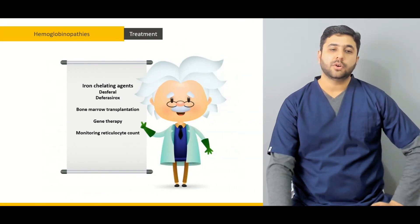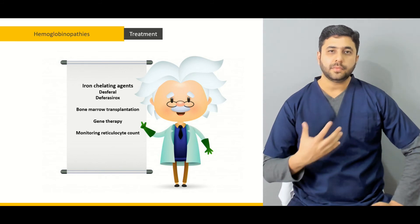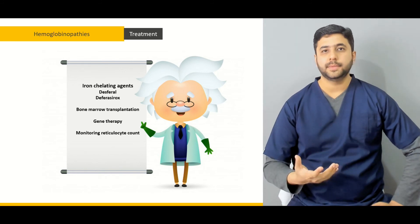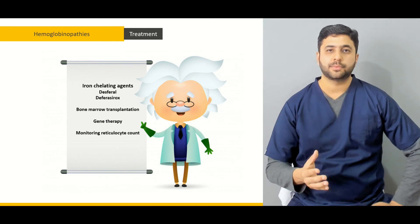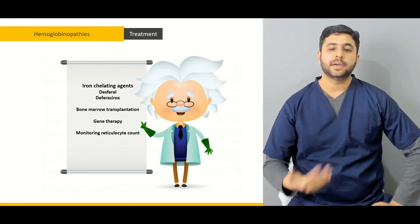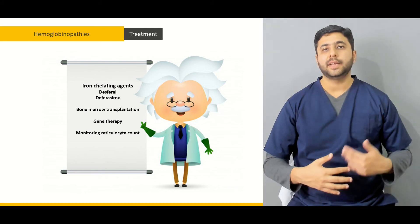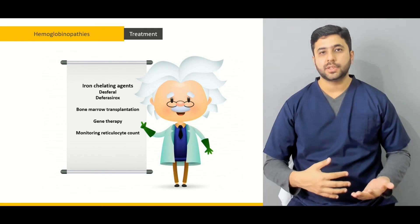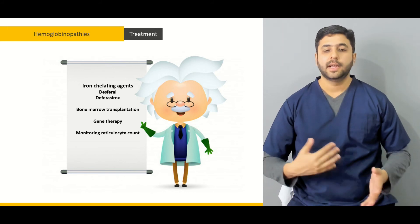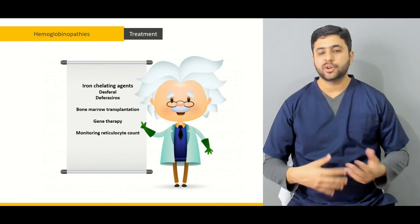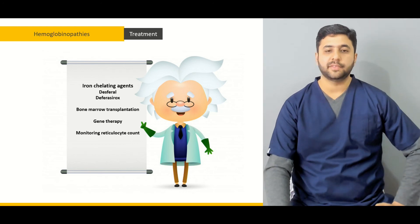Overall, how do we treat the hemoglobinopathies on the whole, specifically the thalassemia syndromes? As we know there is no definitive cure as yet for all these problems, but it is important to manage the associated symptoms — specifically with transfusion. Iron overload can be managed by iron chelating agents, and we are going to briefly talk about bone marrow transplantation and gene therapy options which we have.